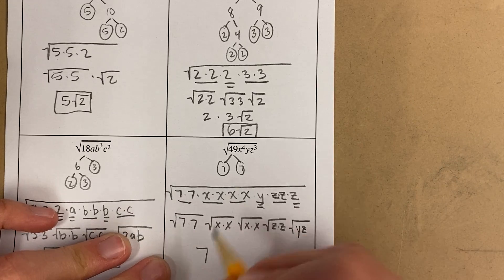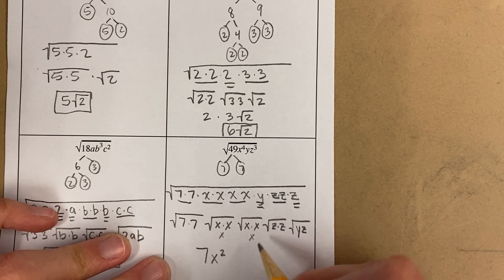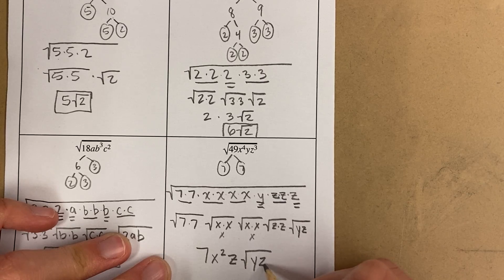This becomes 7. Now look, this becomes x and this becomes x. That's x squared. x times x. Then there's a z and a square root of yz.